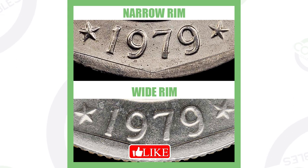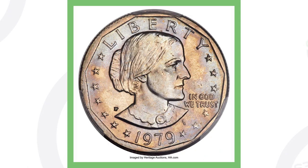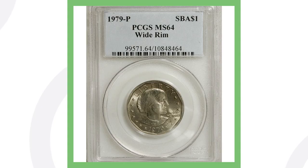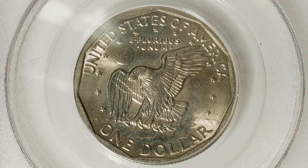The wide rim is more scarce and the one you want to look for; the narrow rim is the more common one. Here's an example of a 1979 Susan B. Anthony dollar with that wide rim. This one has a very high grade, which gives it most of its value — this coin sold for over $6,400. A mint state 64 with the wide rim sold for only $60, so the grade is extremely important.